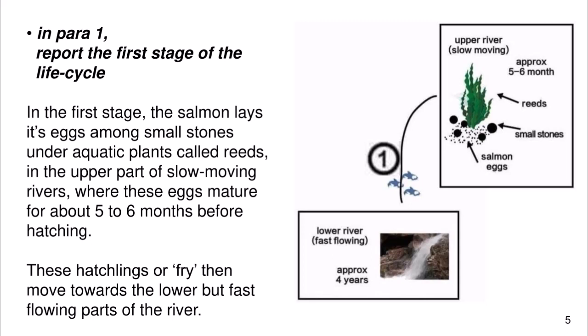In paragraph 1, report the first stage of the life cycle: 'In the first stage, the salmon lays its eggs among small stones under aquatic plants called reeds, in the upper part of slow-moving rivers, where these eggs mature for about five to six months before hatching. These hatchlings, or fry, then move towards the lower but fast-flowing parts of the river.'